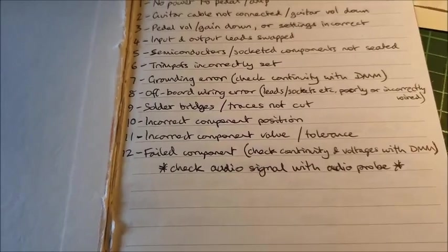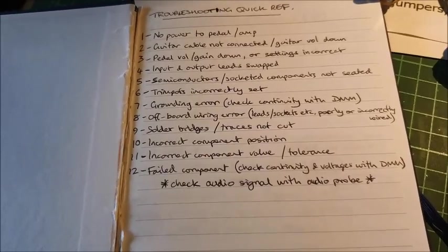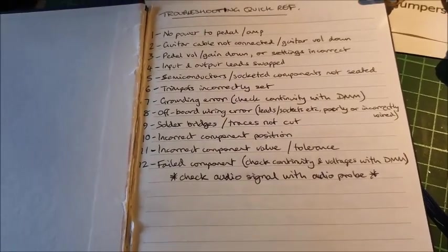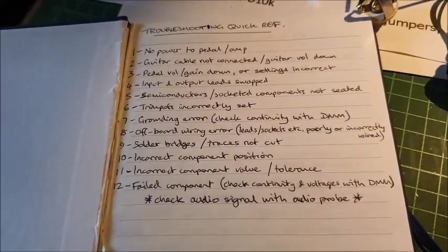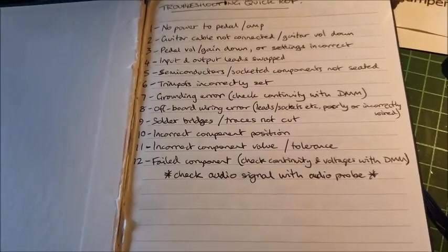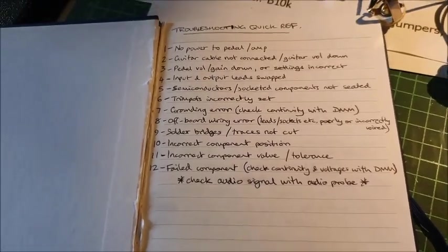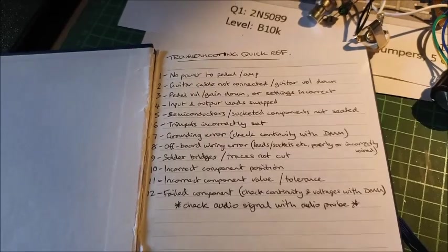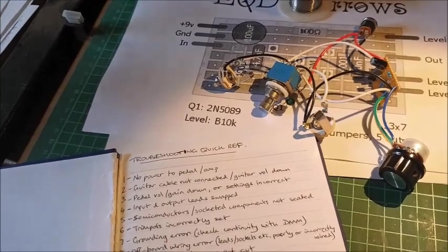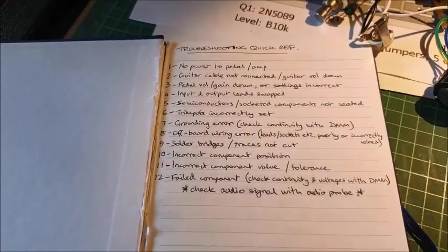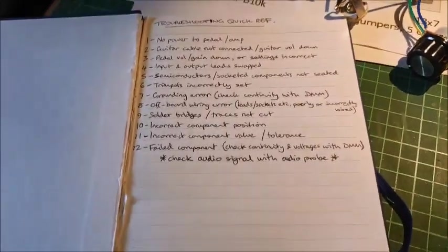And the last one is. Failed components. This is uncommon. But it does happen. Where you think. Oh. It's definitely my fault. And then you realize. You've got a dud component. And the last thing to do. Is to check. The audio signal. With an audio probe. I'm not going to go into that here. But it's a really. Really good idea to do. And if you look up. What an audio probe is. And how it works. If you really can't find the error. After going through all those points. It's a great place. To actually resolve stuff. And it's worked for me. A lot of times. Hope that's been of help. To you.